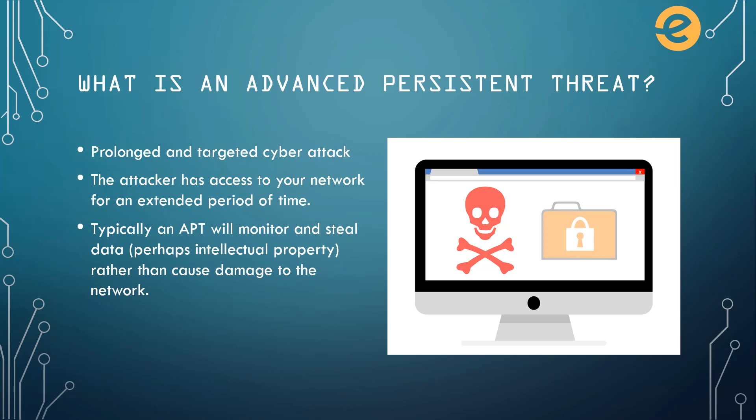Typically an APT's goal is going to be to monitor or steal data. A common example is stealing IP, which is intellectual property. They're not going to be disruptive or try to damage the network — this isn't like a typical ransomware attack. They actually want to go unnoticed. Their goal is to maintain ongoing access to the network, and they can't do that if they get caught, so they don't want to be too disruptive.